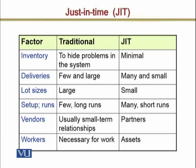Continuous improvement means removing the causes of problems to achieve smooth flow, then reducing inventory again to see what new problems arise, and removing those causes too. For example, a quality problem comes from defective production — that is the cause. Remove the causes, and then material flows smoothly.